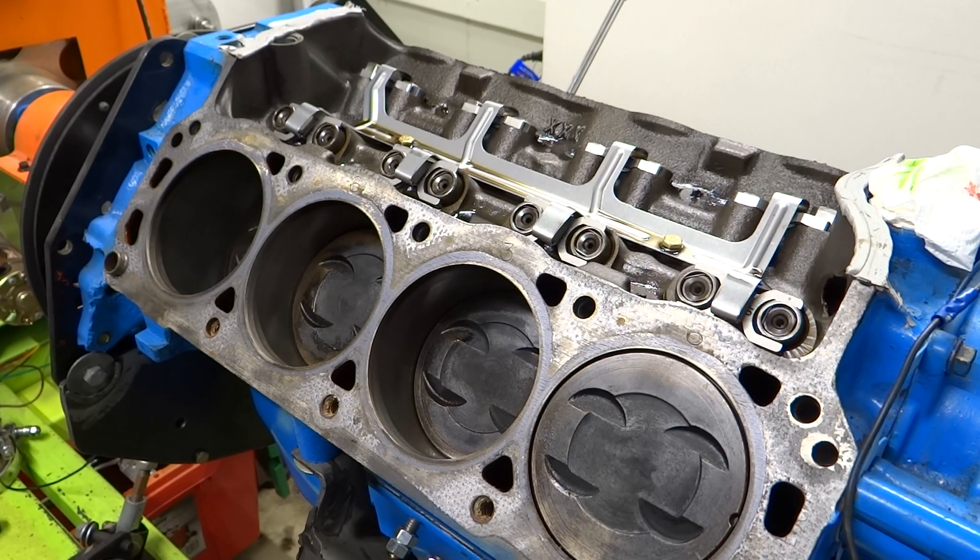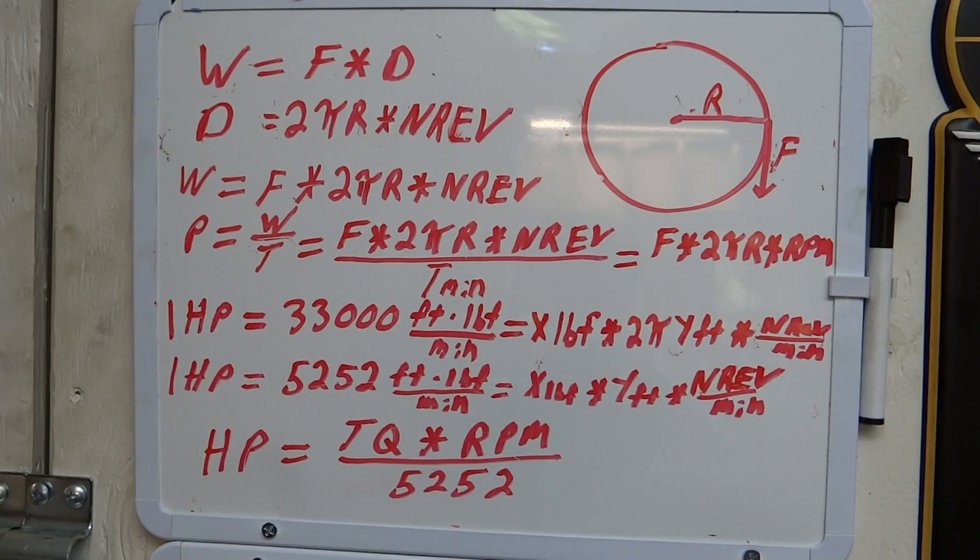So let's go to the whiteboard and we'll just do some simple algebra and show you how it's calculated. This is going to be my best attempt at explaining where the number 5252 comes from in the equation: horsepower equals RPM times torque divided by 5252.